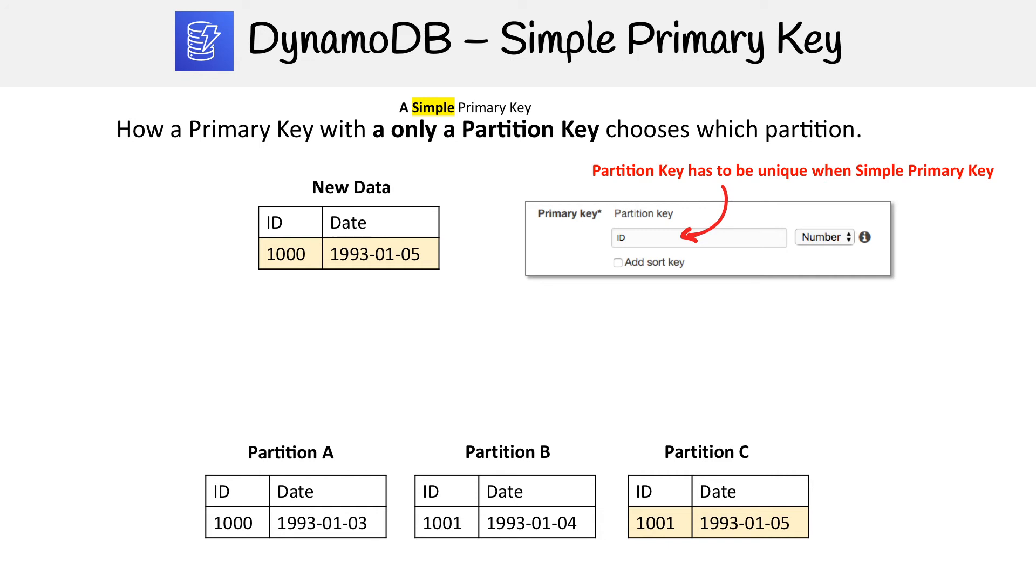ID is a really great value because that's going to be extremely unique, and that is very important when designing simple primary keys.